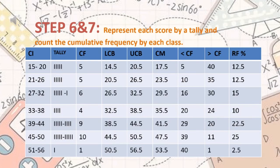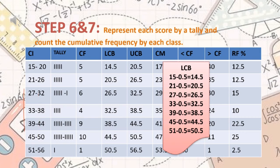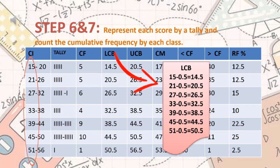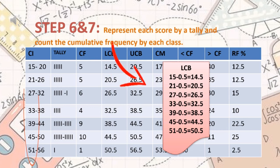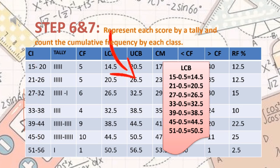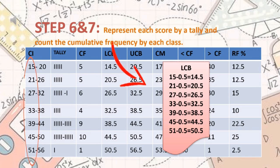Our next column is LCB, or lower class boundary. To get the lower class boundary, we subtract 0.5 from the lower class limit. For example: 15 minus 0.5 equals 14.5; 21 minus 0.5 equals 20.5; 27 minus 0.5 equals 26.5, and so on. So our LCB values are 14.5, 20.5, 26.5, 32.5, 38.5, 44.5, and 50.5.